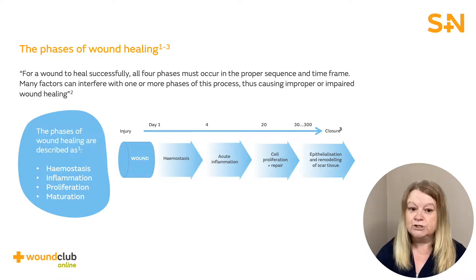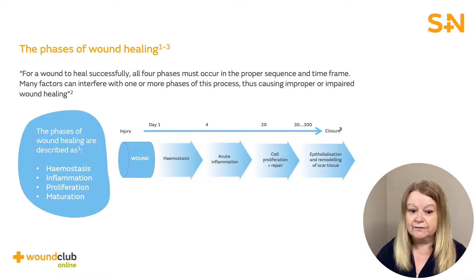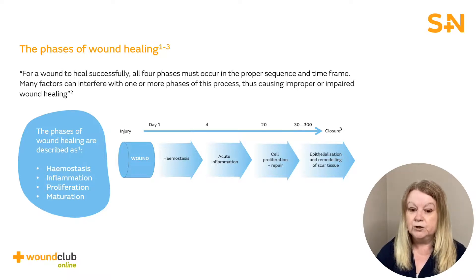Maturation happens once the wound is closed. Collagen is reorganized to form a scar, but the skin will only ever regain 80 percent of its original strength. Maturation can take months, and in large open wounds this process can take years.